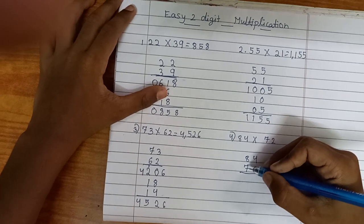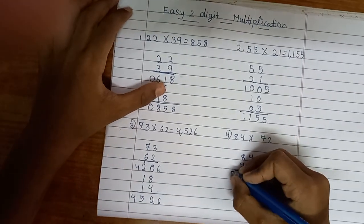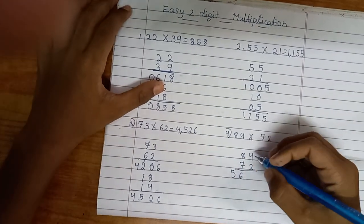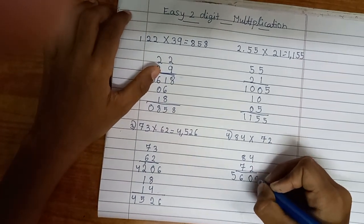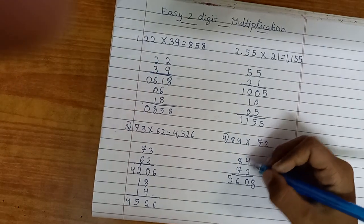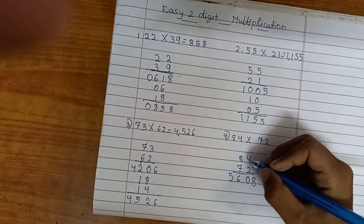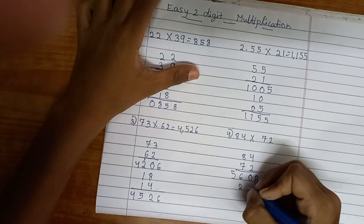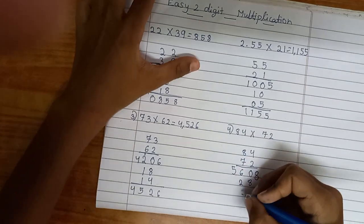8 times 7 is 56. 4 times 2 is 8. Now 7 times 4 is 28. 8 times 2 is 16.